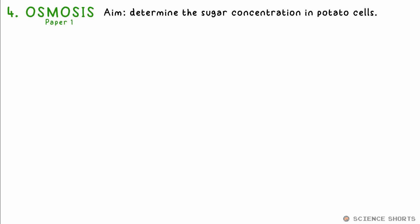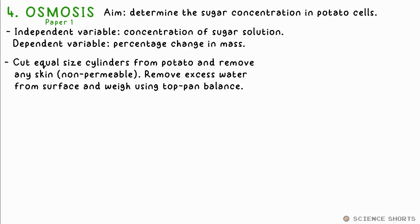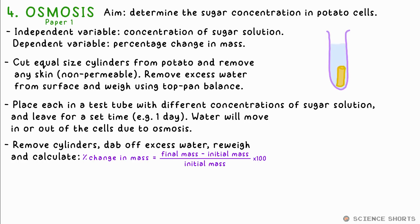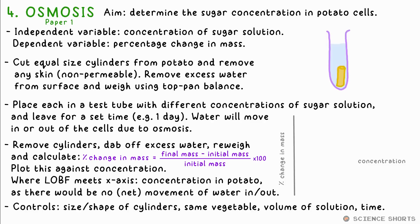Biology 4: osmosis. The aim is to find the concentration of sugar in potato cells, but it could be another vegetable instead. Cut equal-sized cylinders from the same vegetable using a corer; chop off the ends so there's no non-permeable skin left. Dab the excess water off the surface, weigh using a top-pan balance, then place in test tubes filled with different concentrations of sugar solution — this is our independent variable. After a set time, say a day, remove them, dab off the excess water again and re-weigh. Calculate the percentage difference in mass for each cylinder — this is our dependent variable. Some will have a positive change, some negative. Plot these against solution concentration and you should get a straight line. Where the line of best fit meets the x-axis is the concentration at which no osmosis occurs — no water moves in or out of the cells — so that must be the same as the concentration of glucose in the potato cells themselves.